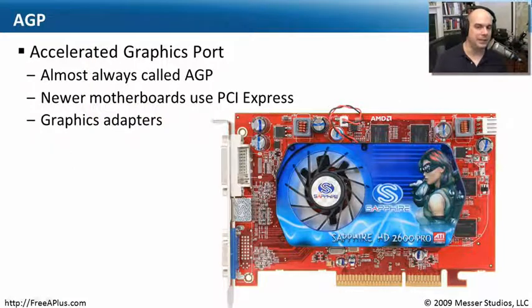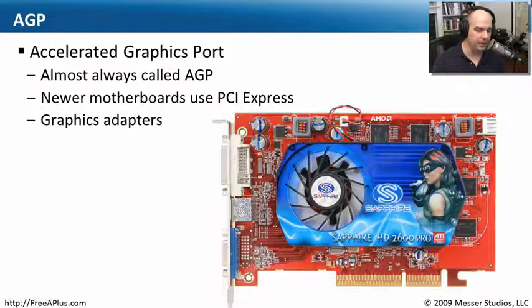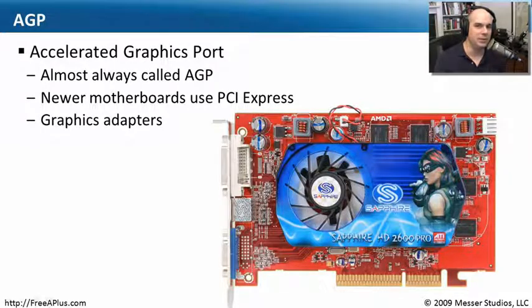Before we got really high-speed buses, the idea of very good graphics really took off — driven especially by gamers pushing the capabilities of computers with video. So a video format came out called an Accelerated Graphics Port bus, or AGP bus. We almost never called it Accelerated Graphics Port; it's always AGP. These were specifically designed for graphics adapters on older Pentium 3-type systems that didn't have enough CPU cycles to support a lot of high-end graphics, so we created a specialized high-speed bus just for graphics.